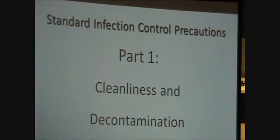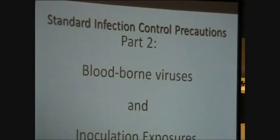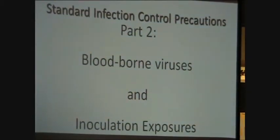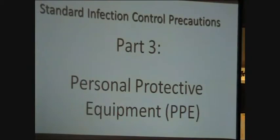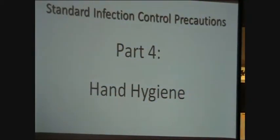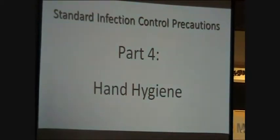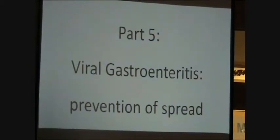The first four presentations focus on the core elements of standard infection control precautions. The first focuses on cleanliness and decontamination. The second focuses on bloodborne viruses and the management of inoculation injuries. The third focuses on the use of personal protective equipment. The fourth focuses on hand hygiene. Standard infection control precautions should be applied in all healthcare settings to reduce the risk of infection to patients, residents and staff. This presentation is the fifth in the series and focuses on the key principles for reducing the spread of viral gastroenteritis in care home settings.